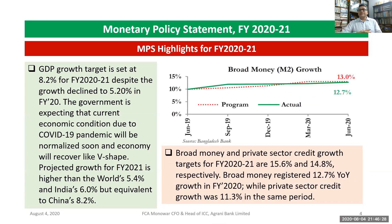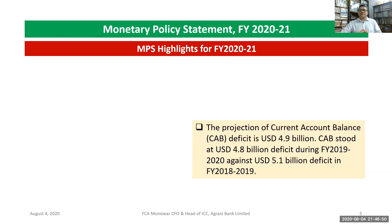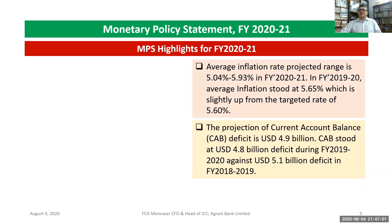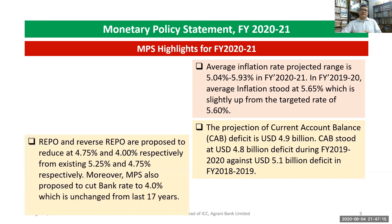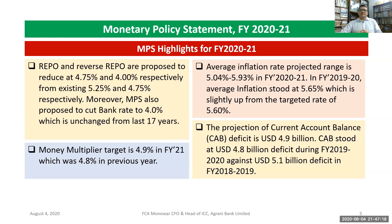Looking at the broad money growth, the actual figure is 12.7% for the previous year, with a 30% projection adjustment for the current account balance target of 4.9 billion USD. The average inflation rate is projected at 5.04% to 5.93%. The money multiplier is targeted at 4.9% for 2021, compared to 4.8% in the previous year. The repo rate and reverse repo rate are proposed to be reduced to 4.75% and 4.0% respectively, from the existing 5.25% and 4.75%.